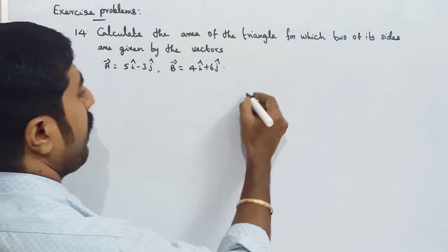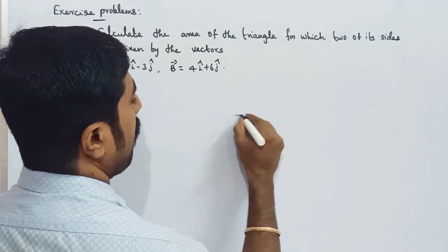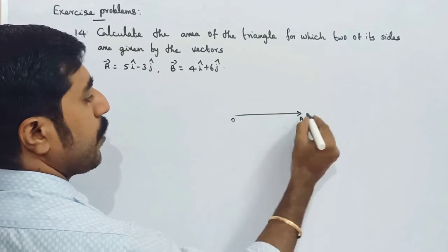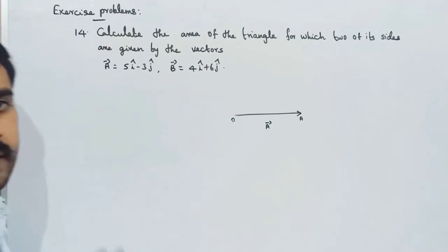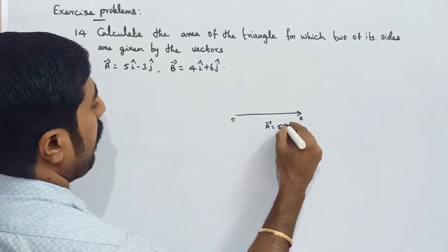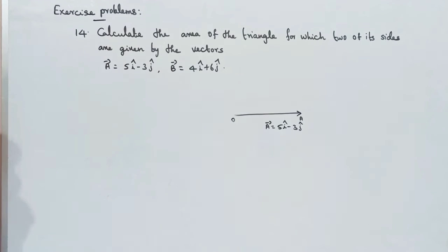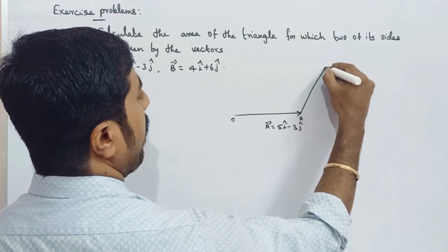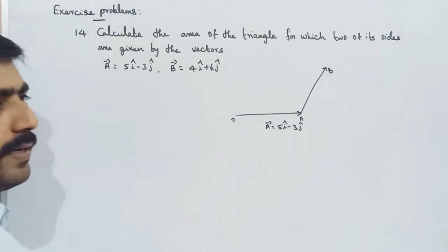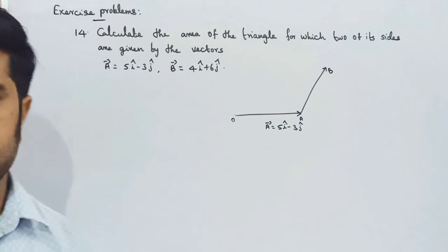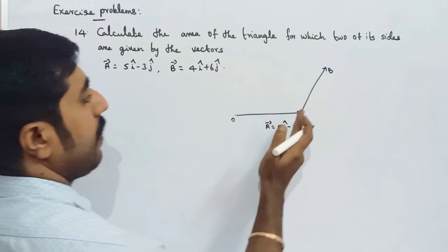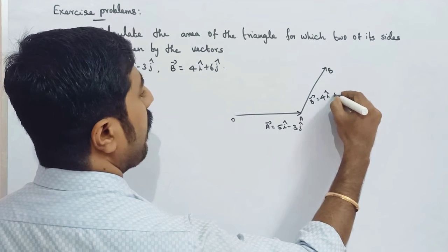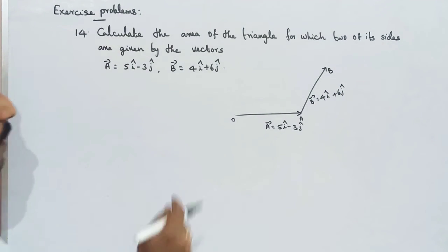For example, this is vector A and this is vector B, starting from origin O. Vector A is equal to 5i-cap minus 3j-cap. This vector B is equal to 4i-cap plus 6j-cap.